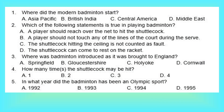1. Where did the modern badminton start? A. Asia Pacific. B. British India. C. Central America. D. Middle East. 2. Which of the following statements is true in playing badminton? A. A player should reach over the net to hit the shuttlecock. B. A player should not touch any of the lines of the court during the serve. C. The shuttlecock hitting the ceiling is not counted as fault. D. The shuttlecock can come to rest on the racket.